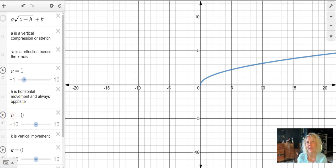Remember the h value is always opposite, so as I move the slider in the positive direction, notice that my graph is shifting to the left. So remember your h value is horizontal movement, it is always opposite.